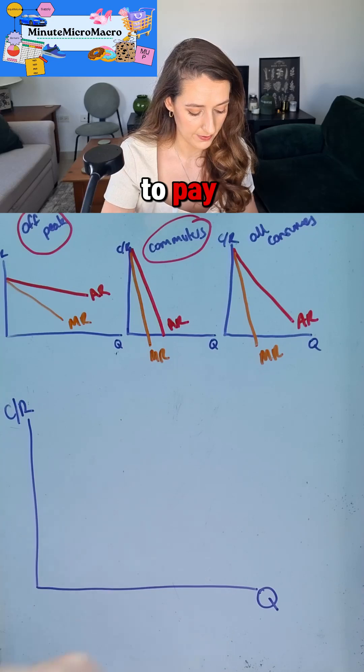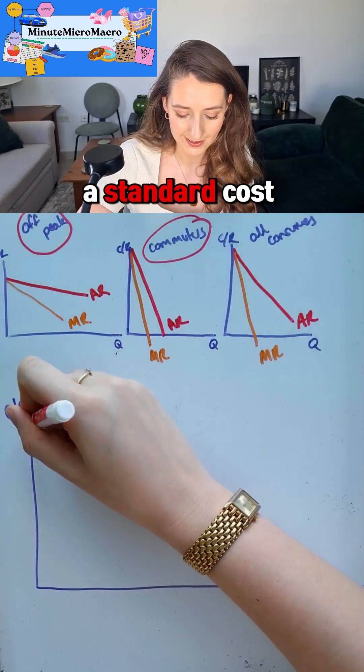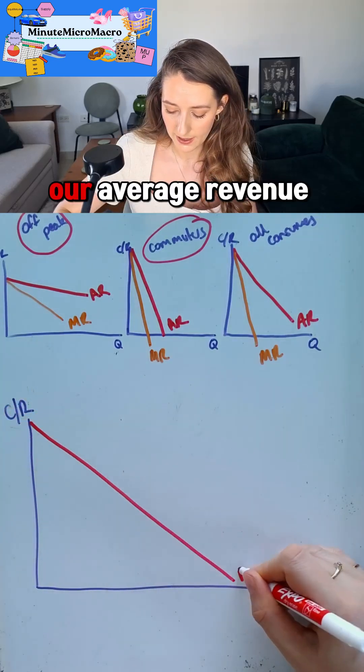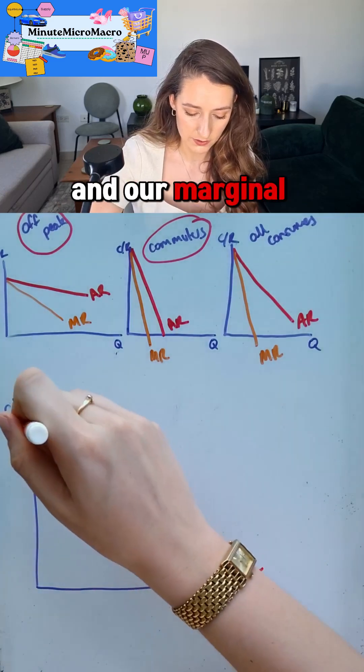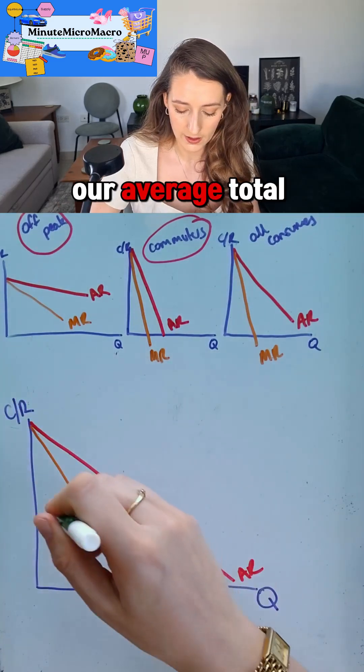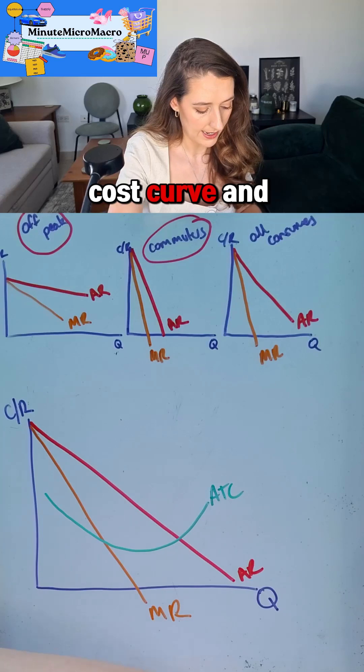We would have our average total cost curve and our marginal cost. Originally, before we learned about price discrimination, we would have said that they could set the price based on the profit-maximizing condition.